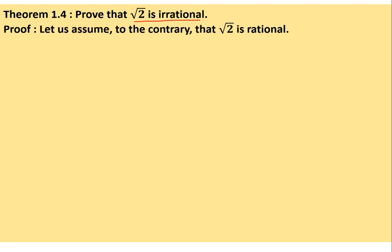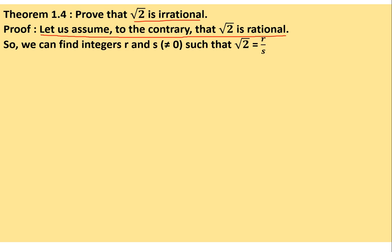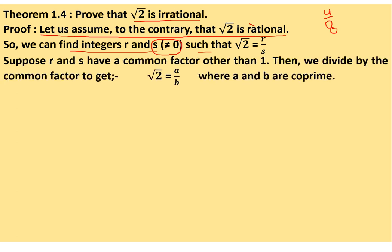Then we will say that the contradiction arose because our assumption that root 2 is rational was wrong — and therefore root 2 is irrational. This is called proof by contradiction. So here, let us assume on the contrary that root 2 is rational. Since it is rational, we can find integers r and s, where s is non-zero, such that root 2 = r/s.